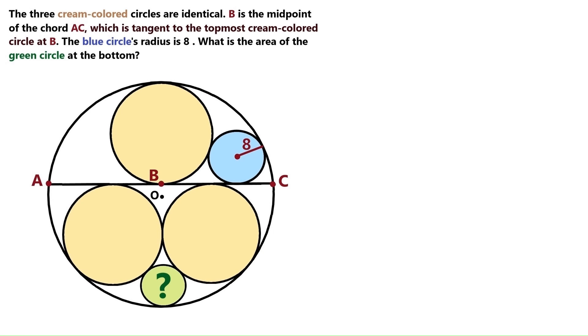In this absolute crazy geometry problem, we've got this huge circle with center at point O, and these three identical cream-colored circles are packed inside the big circle. We've got this chord AC between the circles, and it's a tangent to the top circle at its midpoint B. We know this blue circle's radius is 8, we don't know any other distances, and we are asked to find the area of this cute green circle at the bottom.